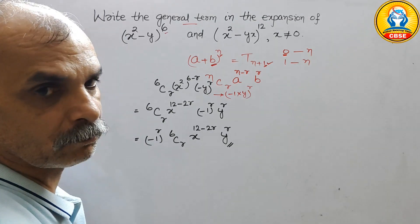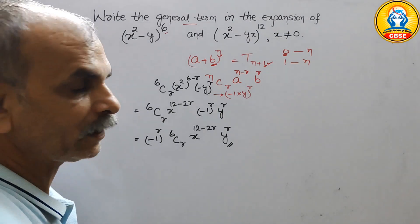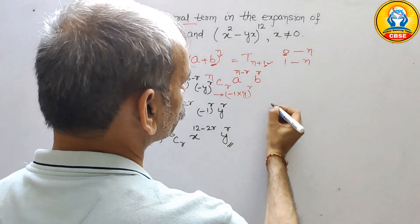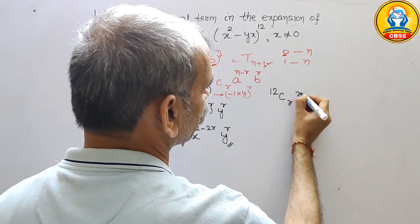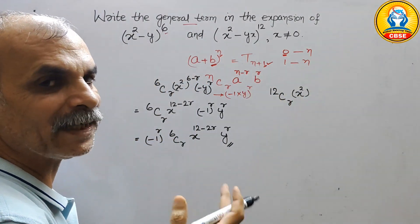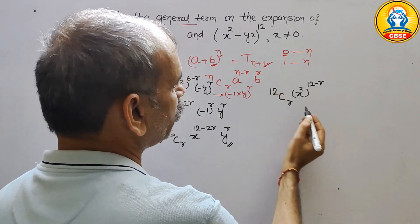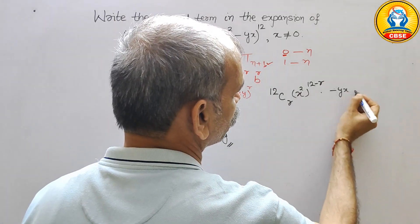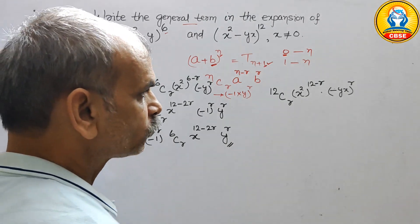Now for the second expression, (x² - yx)¹², we write the general term similarly. It comes as 12Cr, where a is x² with power 12 minus r, and b is minus yx with power r only.